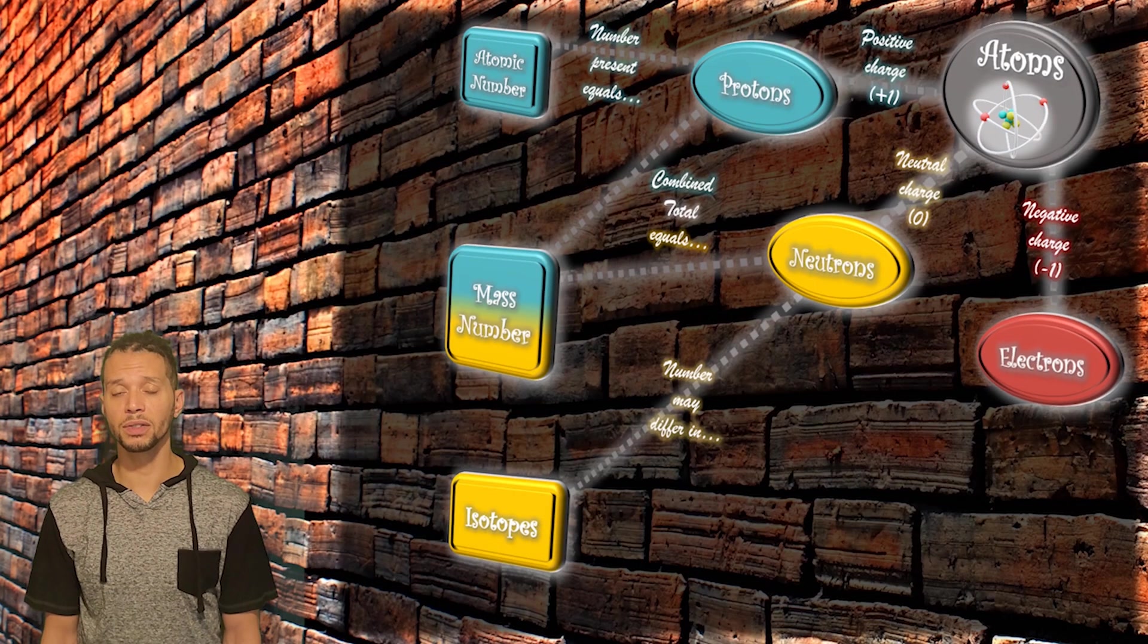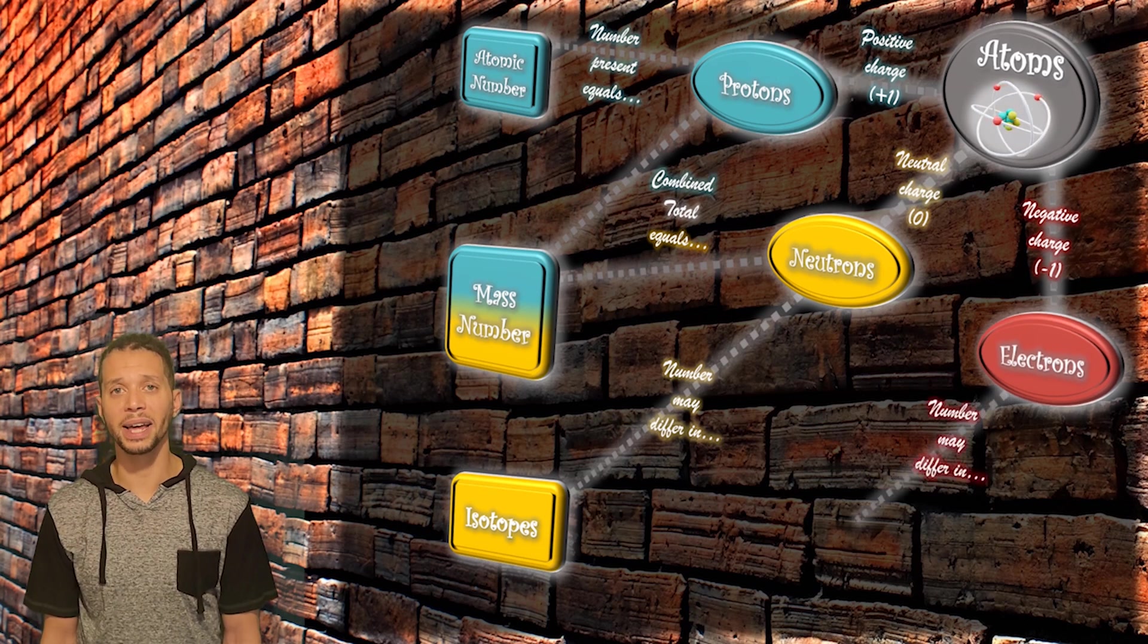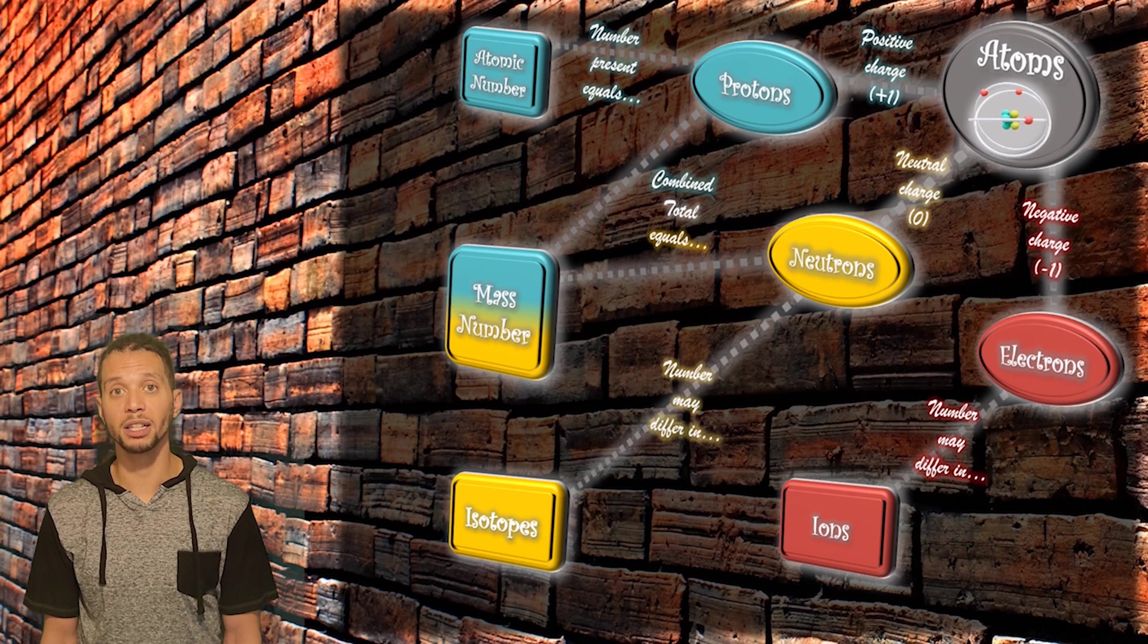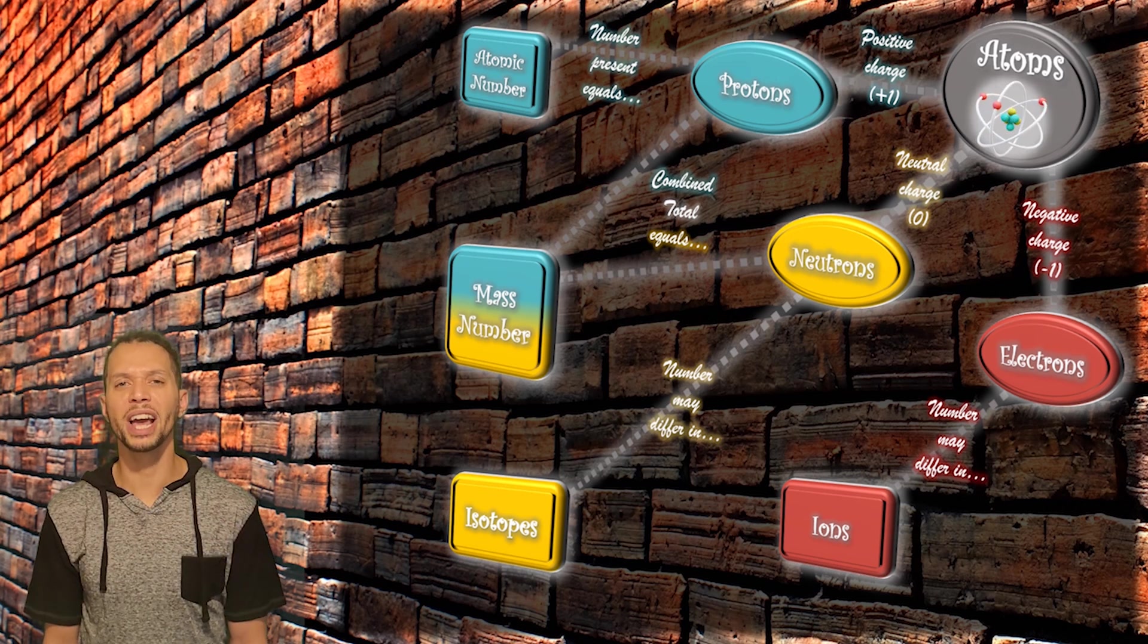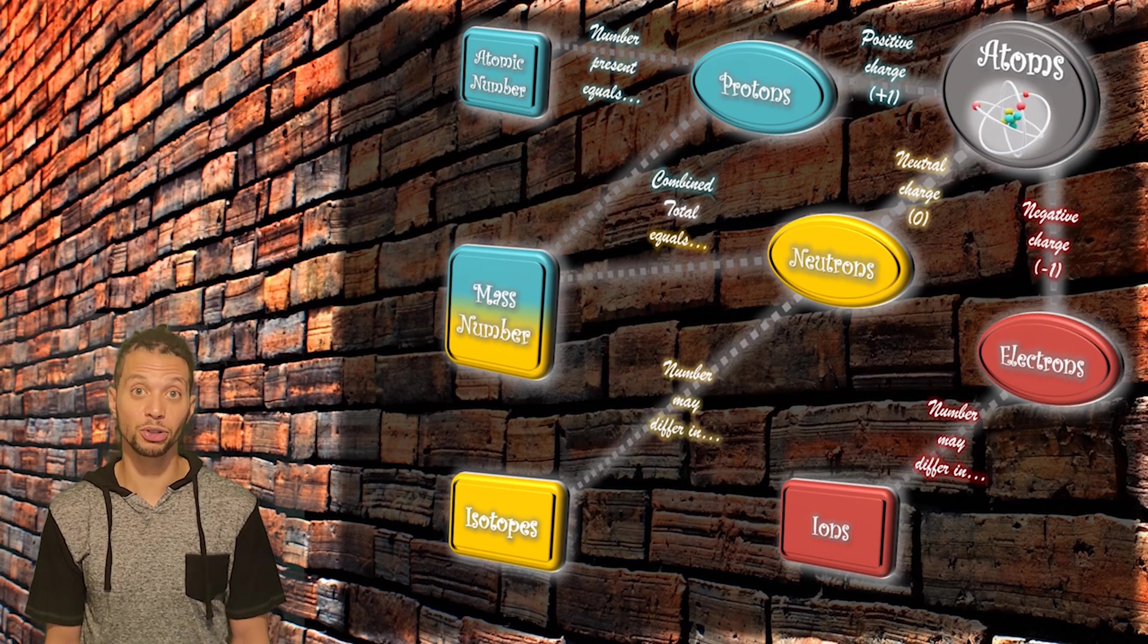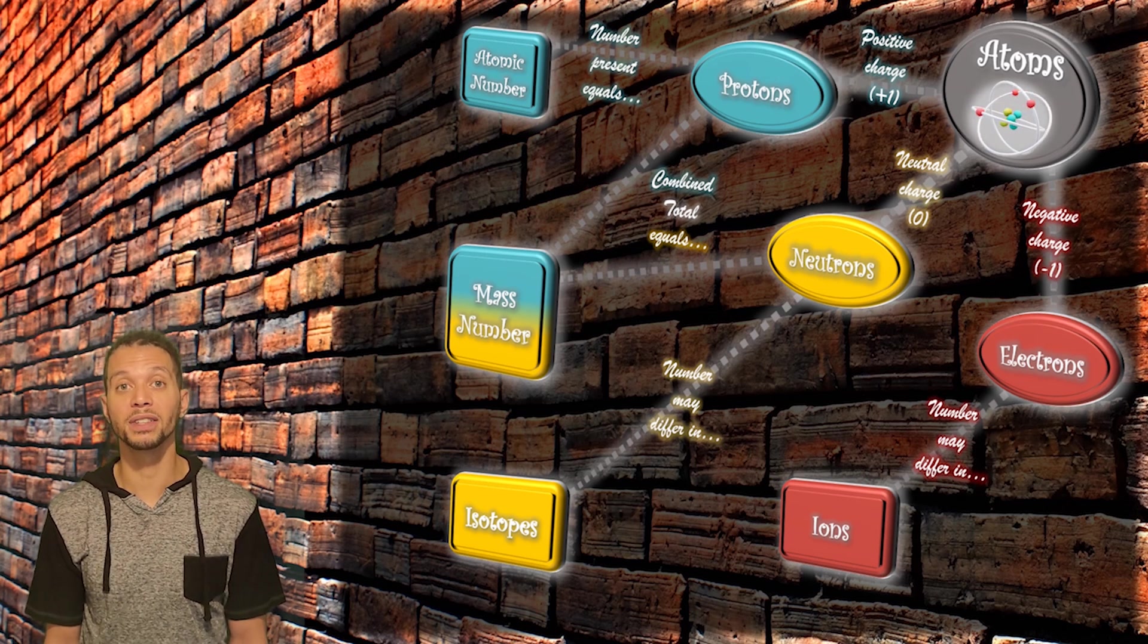But under certain conditions, the number of electrons in an atom will be different from what the stable form of that element would have. And that type of atom is called an ion. Ions are charged atoms or molecules that carry a charge due to the extra or missing electrons in the atom.